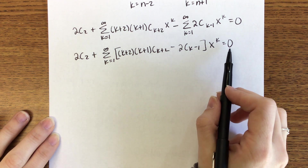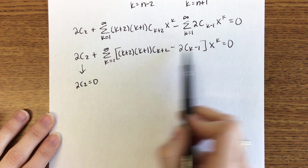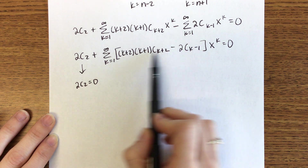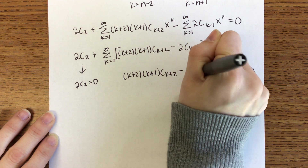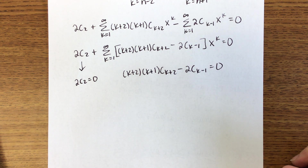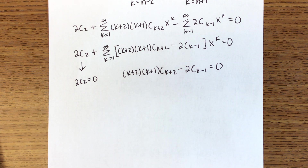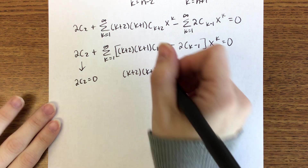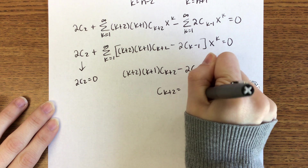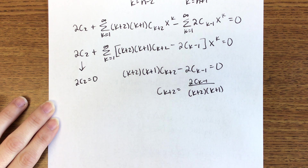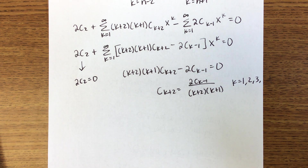Setting this equal to zero tells us two things: 2c₂ = 0, so c₂ = 0. And the recurrence relation: (k+2)(k+1)c_{k+2} - 2c_{k-1} = 0, so c_{k+2} = 2c_{k-1} / [(k+2)(k+1)], valid for k ≥ 1. We always solve for the higher-indexed term — relate it to something previous, not something in the future.